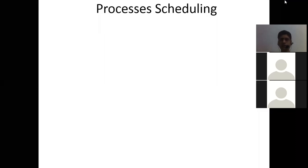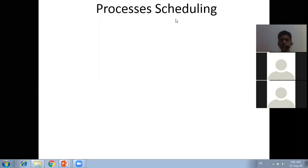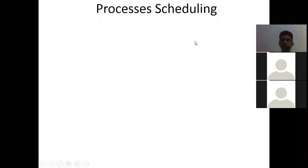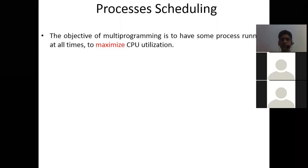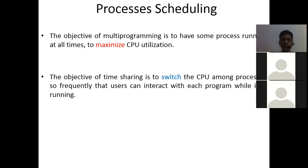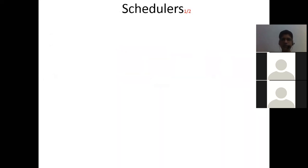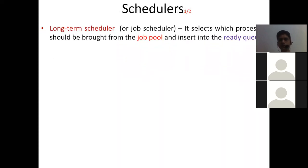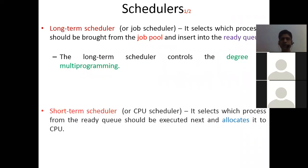Why do we need process scheduling? Because we want our CPU to use its power as much as possible. This is only possible when we give it a number of processes to run. The CPU has enormous computational power, so process scheduling is for multi-programming — to have some process running at all times to maximize CPU utilization across multiple processes simultaneously using schedulers.